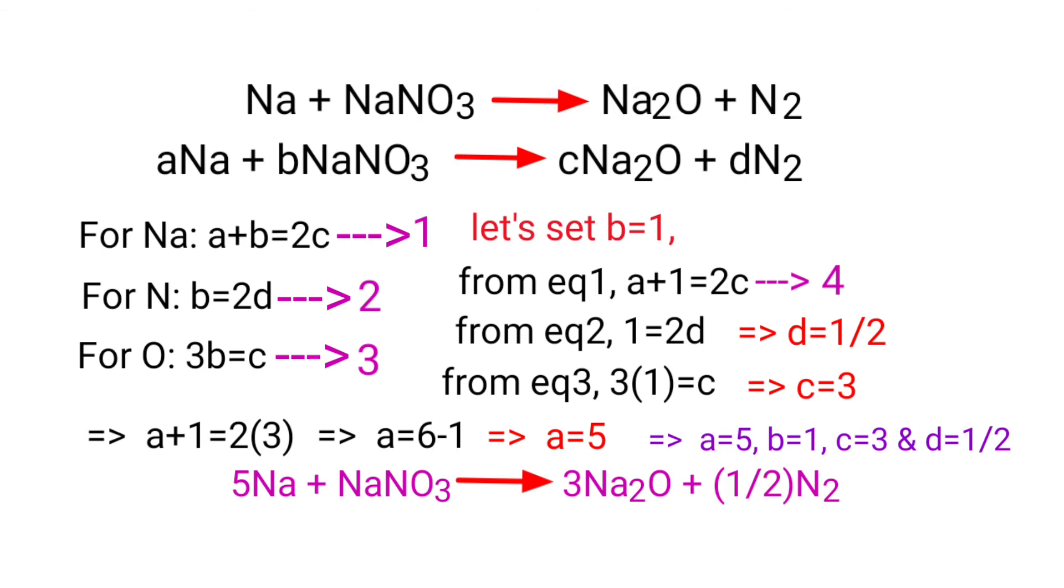Now you can multiply the equation by a coefficient of 2 to get whole numbers. So 10 Na plus 2 NaNO3 gives us 6 Na2O plus N2. The equation is now balanced.